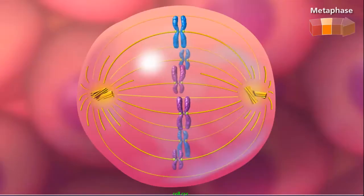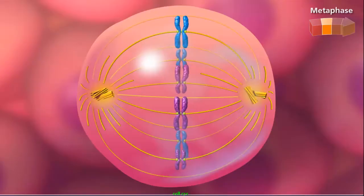During metaphase, all chromosomes are aligned at the equator of the cell, called the metaphase plate.